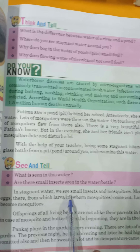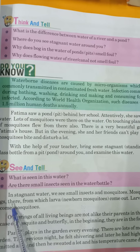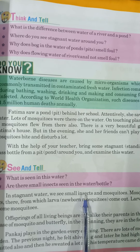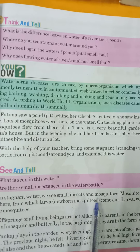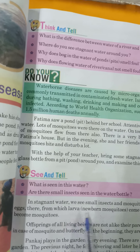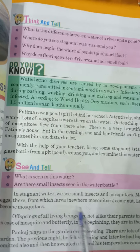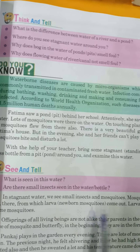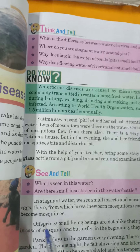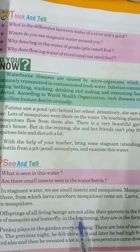In stagnant water we see small insects and mosquitoes. Here in this example we have been told that larvae came out. What are these insects? They are insect larvae. The larvae of all living beings are not alike.